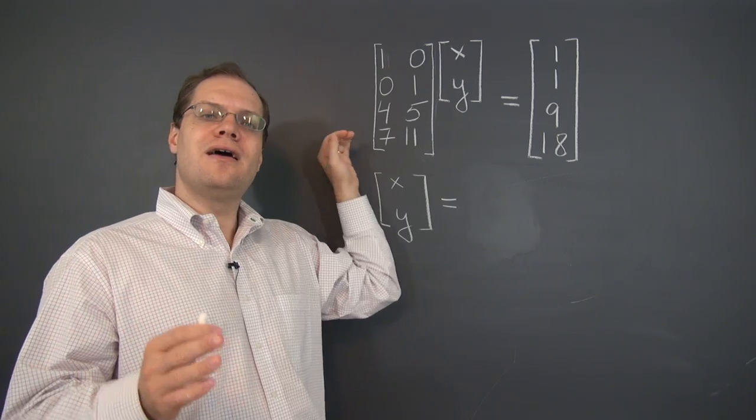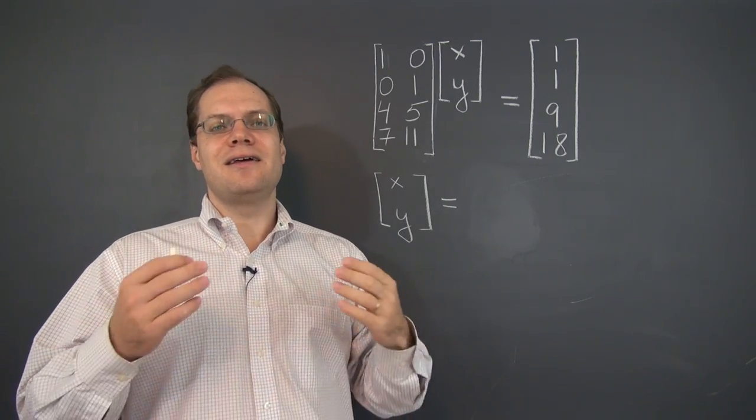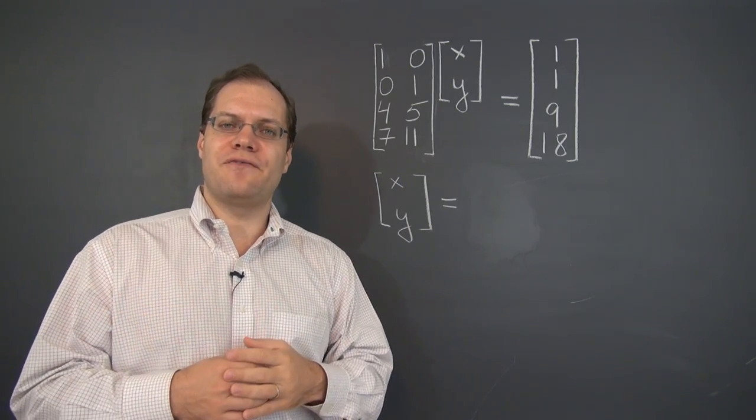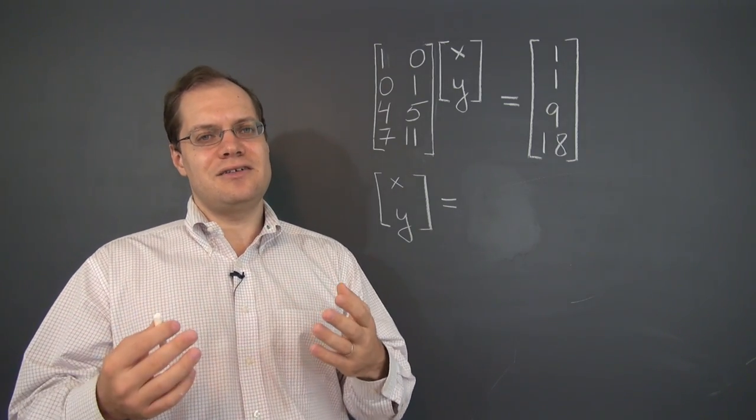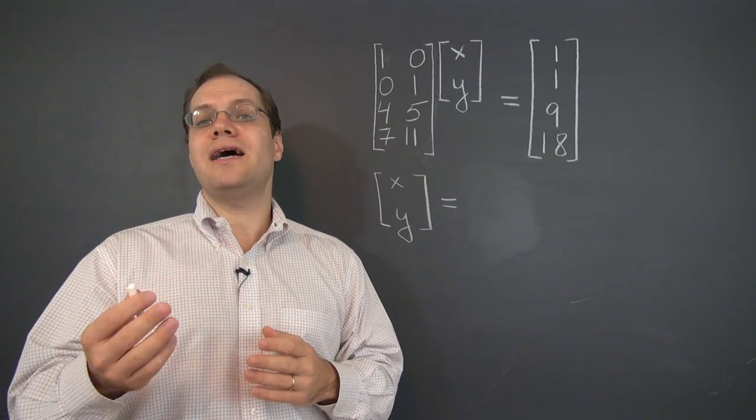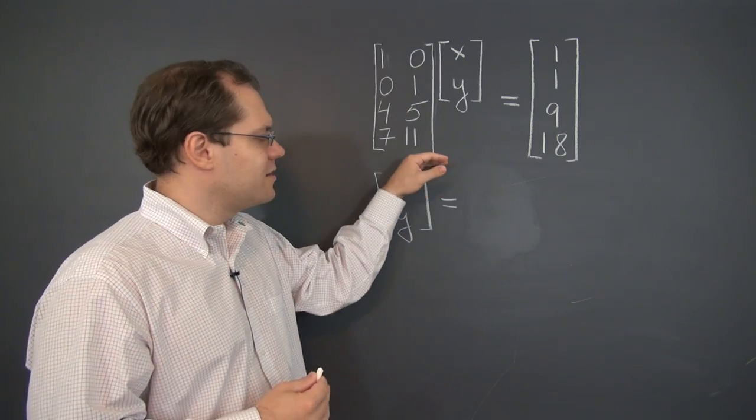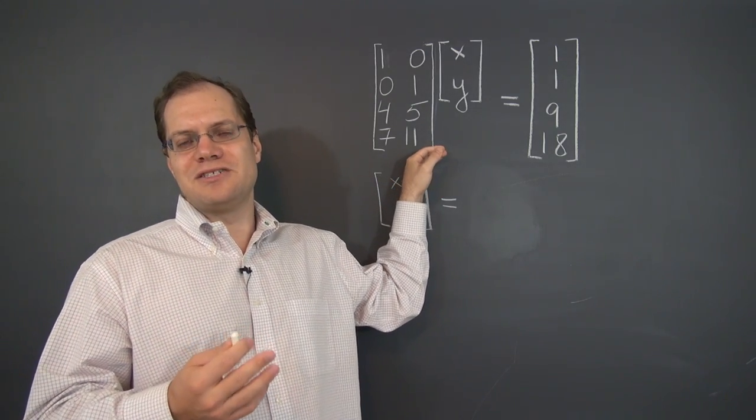You can pause the video and think about whether it's likely that a system with four equations and just two unknowns, two degrees of freedom to satisfy four conditions, is likely to have a solution. So that's thinking about the problem from the point of view of equations.